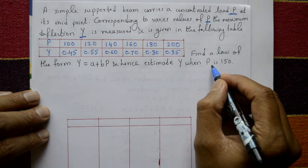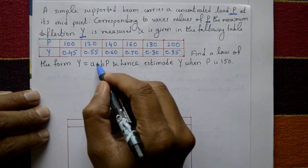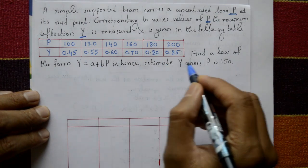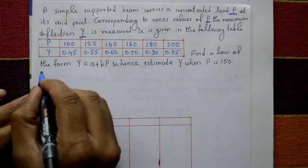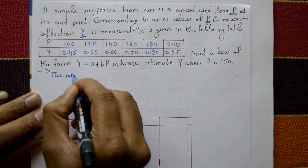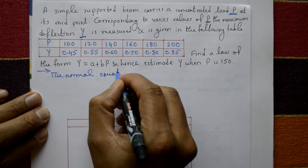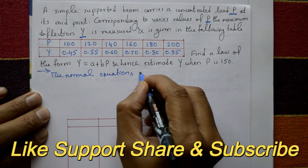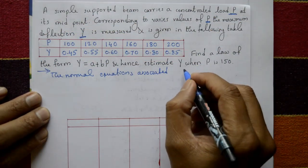Now find the parameters A and B and substitute A and B in this equation. Again you put P values, we get the solution. The normal equations associated with